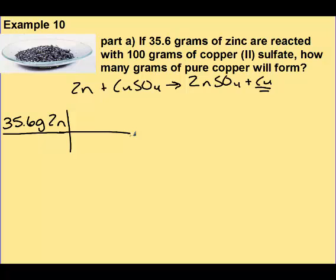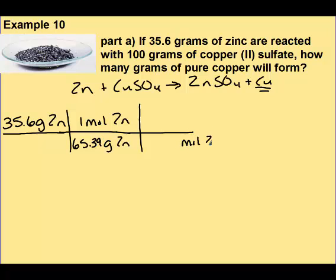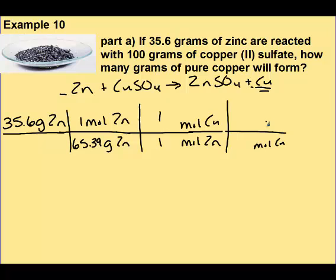It's a gram to gram problem. Step one: convert to moles. It's always one mole of zinc equals so many grams. Then moles of zinc to moles of copper, because that's what I'm trying to get my answer in. For your mole-to-mole ratio, you look at the balanced equation — that's a one to one ratio. Even though it's one to one, you have to write that. And then moles of copper to grams of copper — one mole is always equal to so many grams.